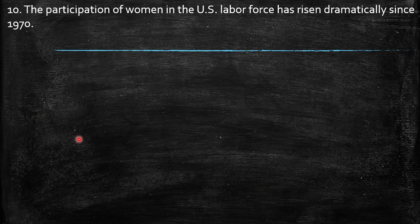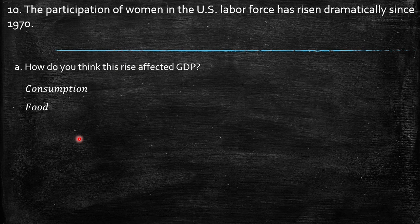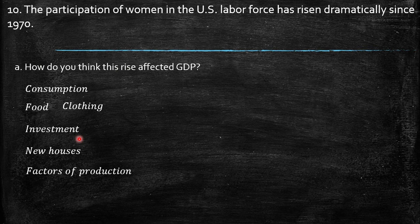Exercise 10: the participation of women in the US labor force has risen dramatically since 1970. How do you think this rise affected GDP? First, because of consumption: more women in the economy means they receive income and will consume part of it — food, perishable goods, clothing, devices, services. For investment, the increased purchasing power of the family should increase, leading to more investment in new houses and factors of production. Women will also be part-owners of factors of production.